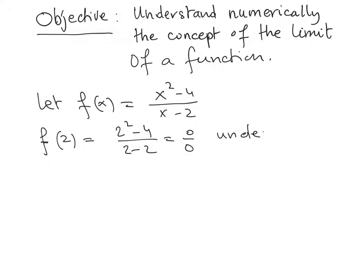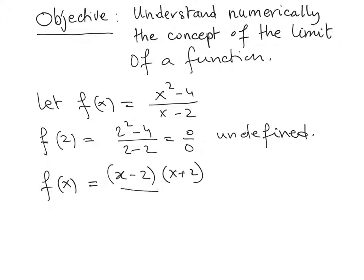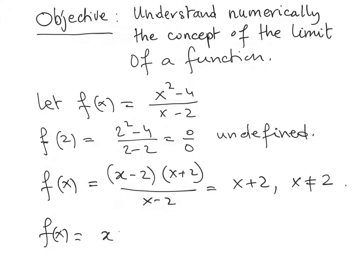So f(2) is undefined — 0/0 does not give a real number. Let's rewrite f(x) in simpler form. We factor the numerator: (x - 2)(x + 2) over (x - 2), which gives x + 2 with the condition x not equal to 2.